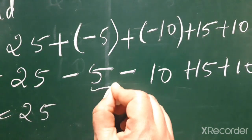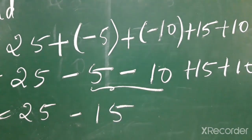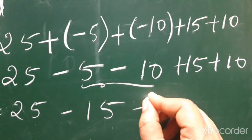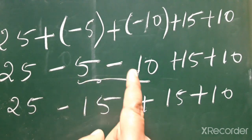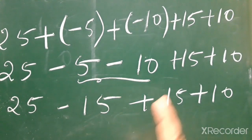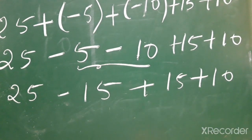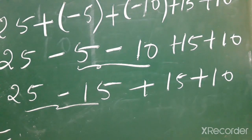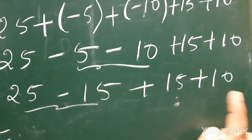25 -5 -10 is -15. Then this plus 15 and plus 10. 25 -5 -10 will become -15. Same symbol means plus 15 and plus 10. Now 25, answer is 25 -15 is how much? 10. 10 plus 15 is 25. 25 plus 10 means...